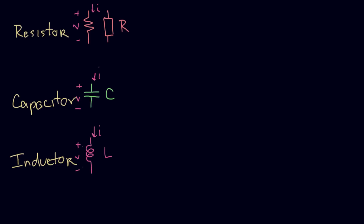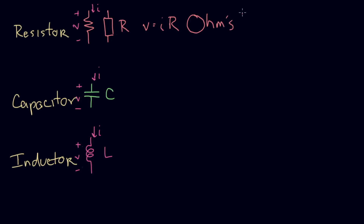Let's go back to our resistor and do the equation. The IV equation — what relates current to voltage — for a resistor is V equals I times R. The voltage across the resistor equals the current through the resistor times this constant of proportionality we call the resistance. This has a very important name: this is called Ohm's Law, and you're going to use this a lot.